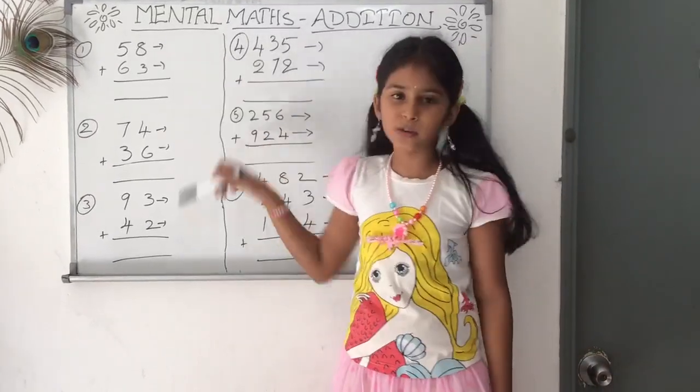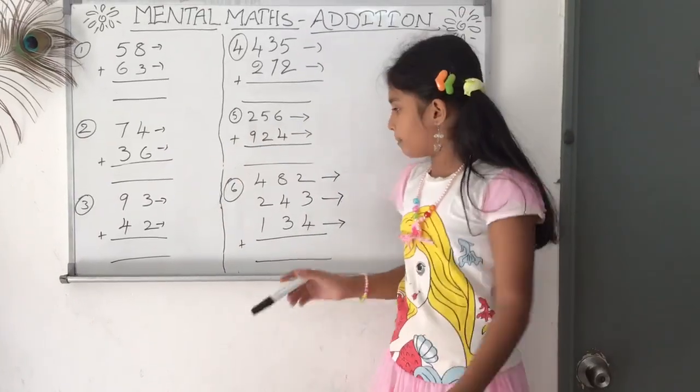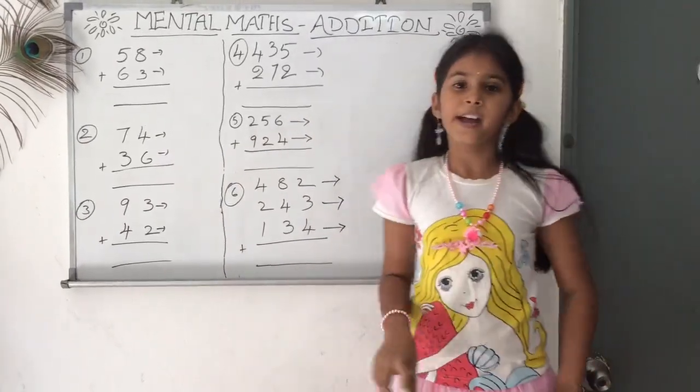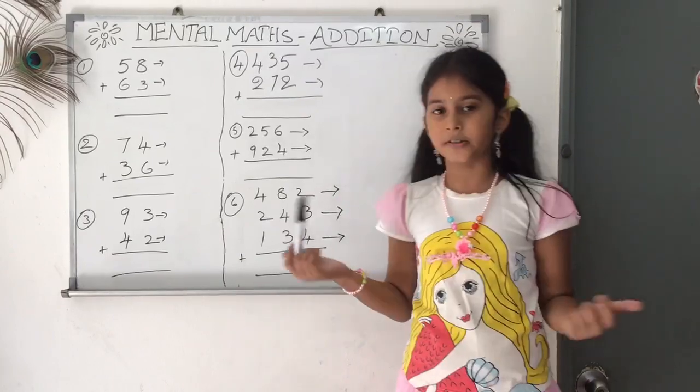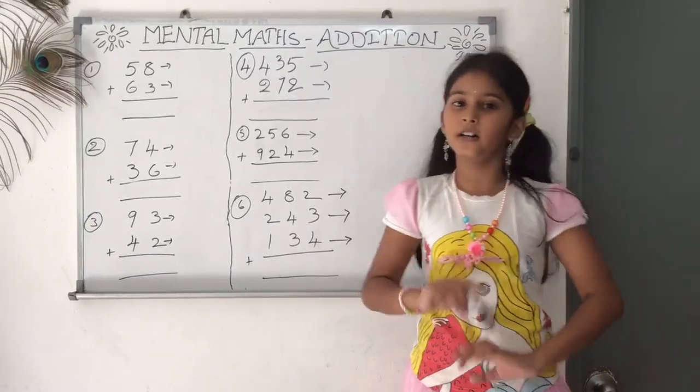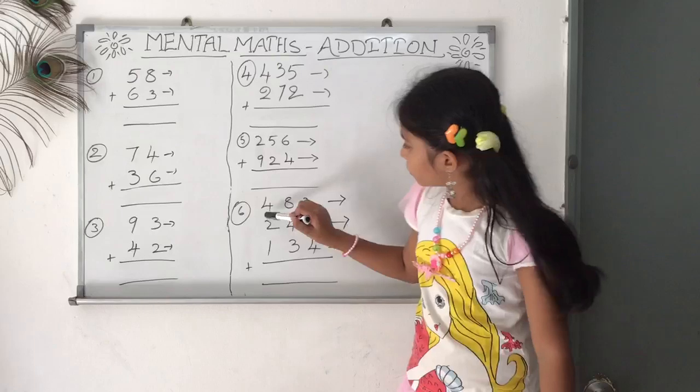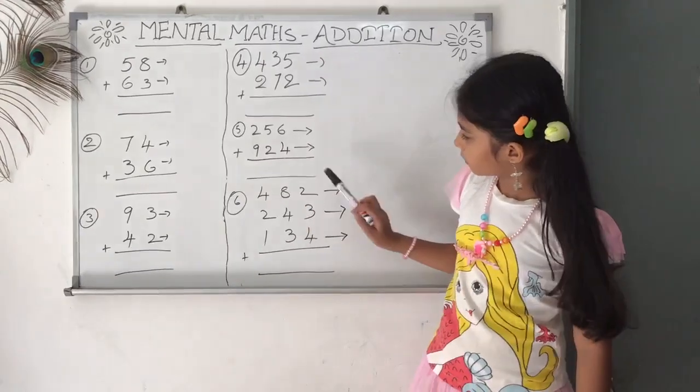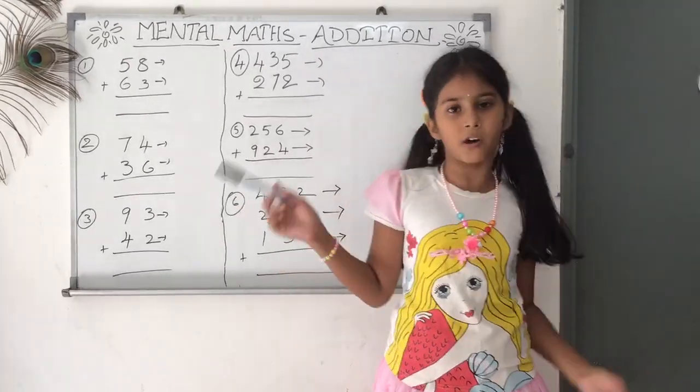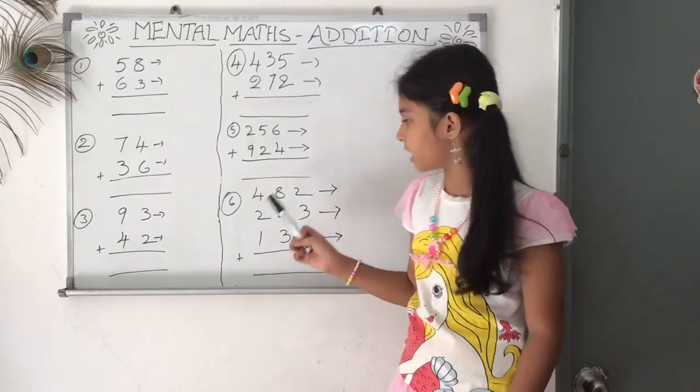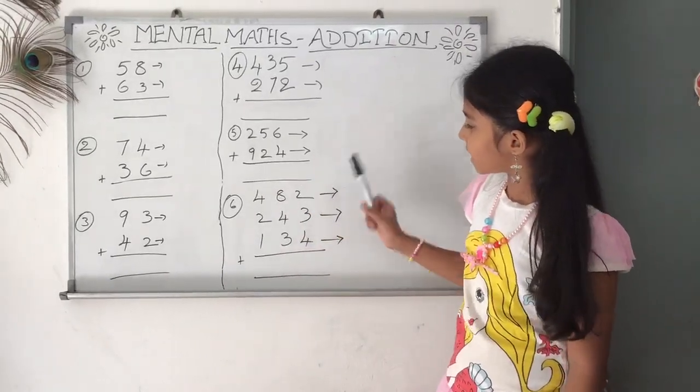Two digits by the normal way we can add easily. But if you get these kind of questions, it may be confusing and sometimes you may get the answer wrong. In the normal way, we add from ones, tens, hundreds and thousands. But in the simple way, we add from hundreds, tens and ones.